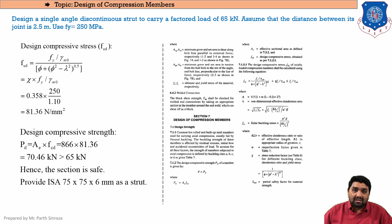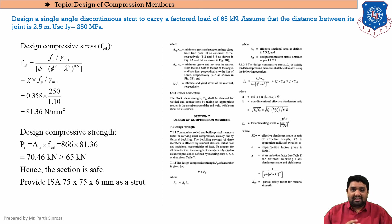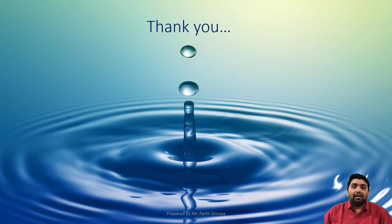This completes our design of struts. Whether it is a single angle or double angle strut, the process is the same — only the assumed kL/r changes: use 100 for double angle struts. Solve the given exercise problem, and from the next session we'll start with the column design portion.